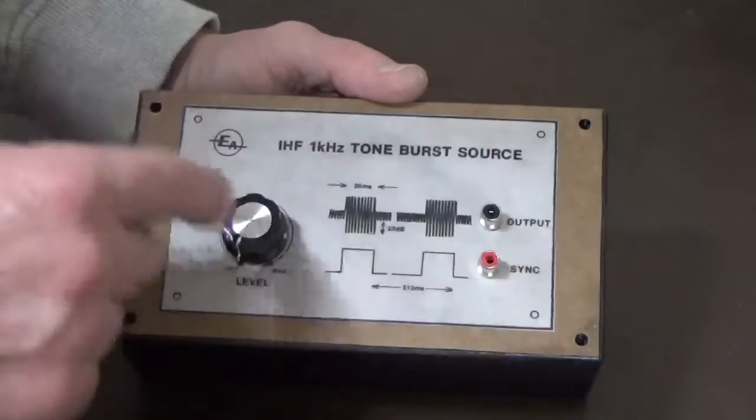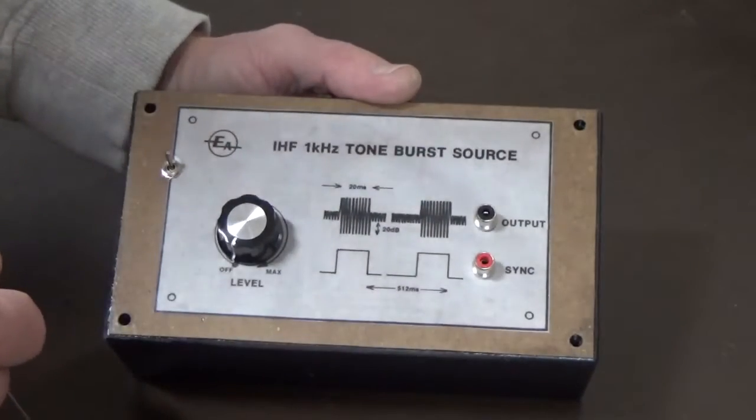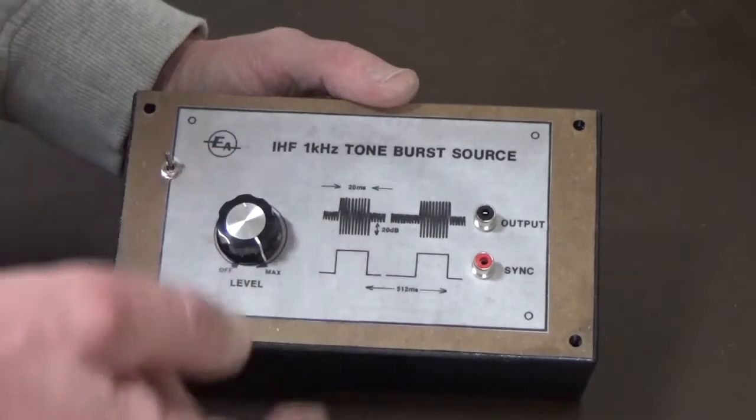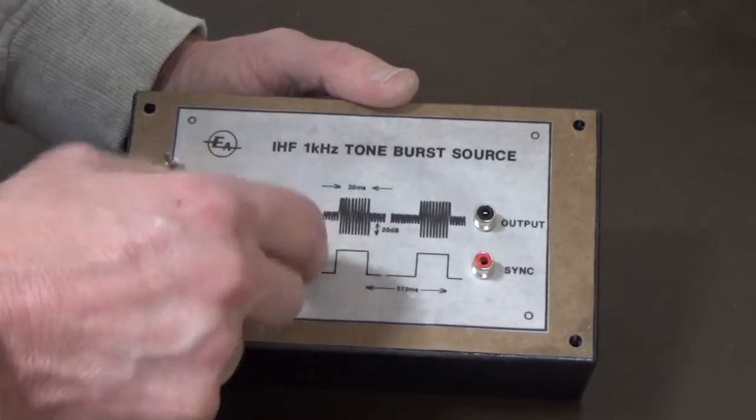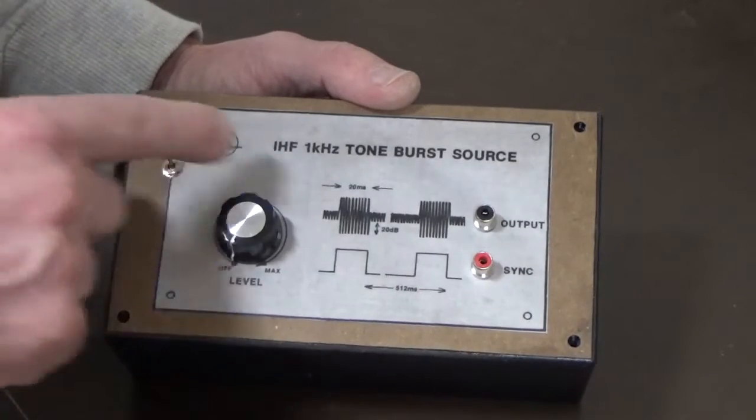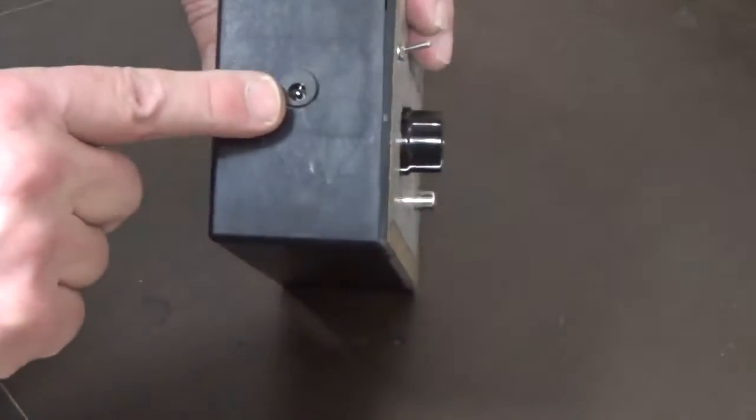So we've got all the right holes drilled and all the outside components put on, including the potentiometer which we had to trim off because the shaft length was too long. So that's all done. That's your on-off switch, and obviously that's your output and your sync, and your power supply in.